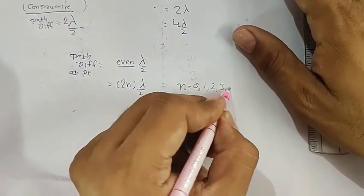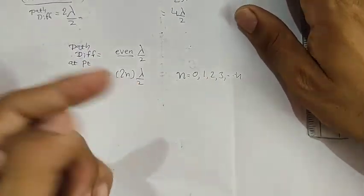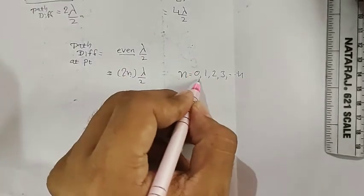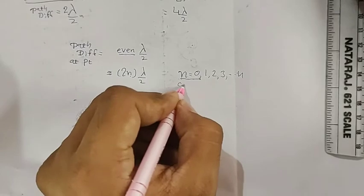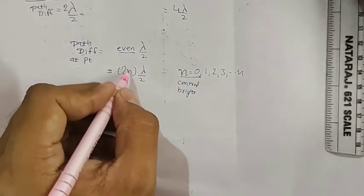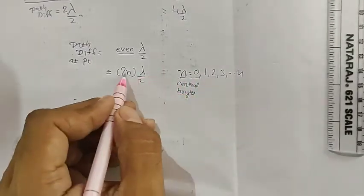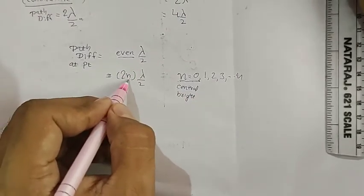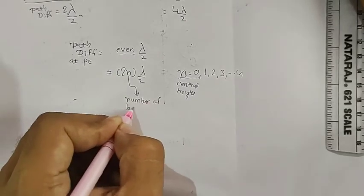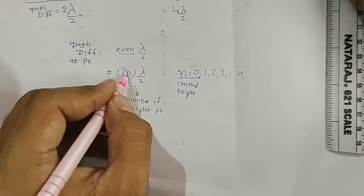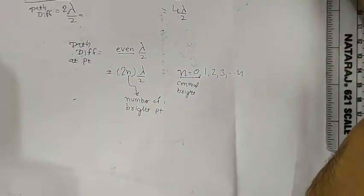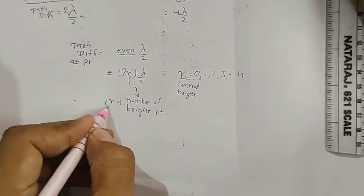When you put n equal to 0, path difference is 0, which denotes the central bright. When n equals 1, path difference is 2λ/2 = λ. When n equals 2, it gives 4λ/2 = 2λ. The n in this formula denotes the number of that bright point. For example, n equal to 0 indicates zeroth bright (central bright), and n equal to 1 indicates first bright point.